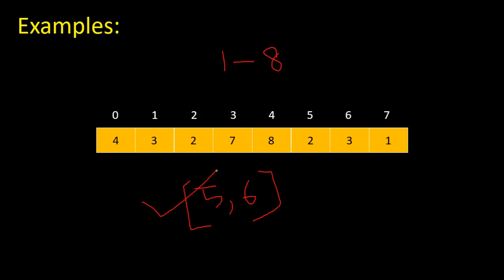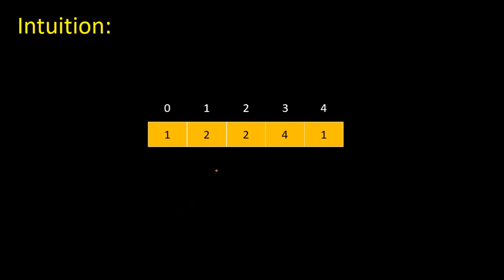Let me go through the intuition. For the sake of understanding, let's assume this is our given array. We're going to iterate through the array from left to right. The first element is one. One minus one is zero — at index zero we're going to multiply the element by minus one, so this element becomes minus one. This means that if we add one to index zero, we get one, meaning we have element one in this array.